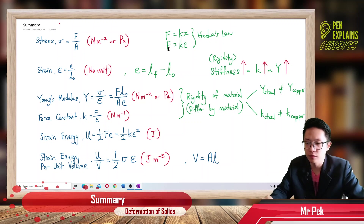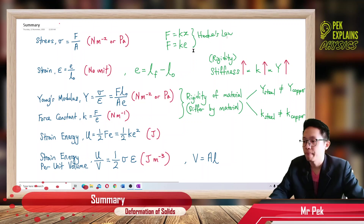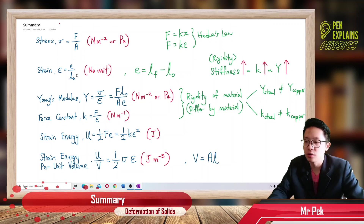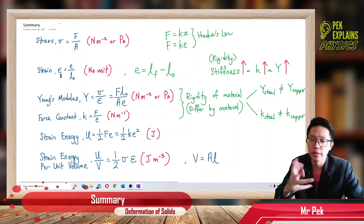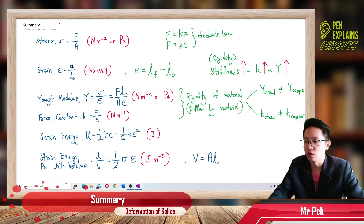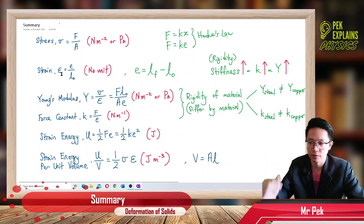So when the wire is being pulled by a certain force, the wire will elongate — it will have elongation. Because of Hooke's Law, when the wire elongates, it will have strain. Strain, the symbol is epsilon. It is the ratio between elongation over original length. Elongation is in meters, original length is also in meters. So meter divided by meter gives no unit. Strain, which is a ratio, always has no unit.